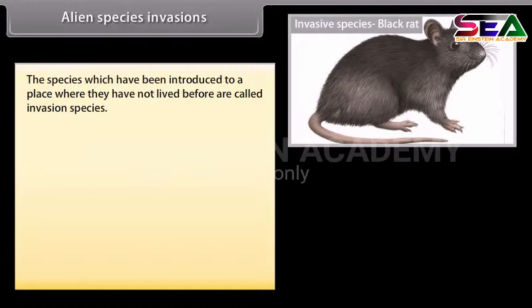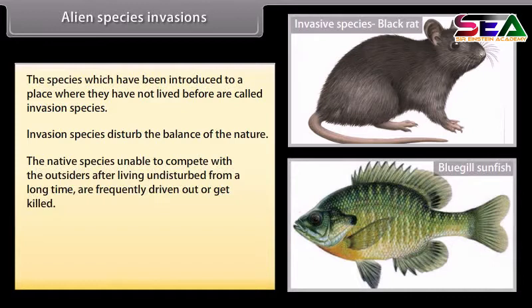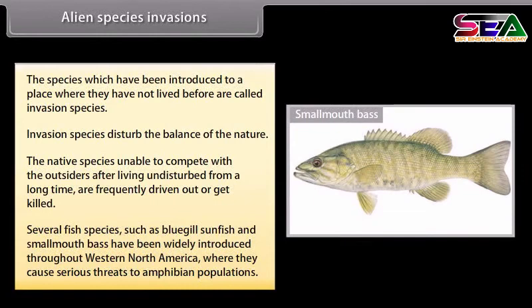Alien Species Invasions. Species which have been introduced to a place where they have not lived before are called invasive species. Invasive species disturb the balance of nature. Native species, unable to compete with the outsiders, are frequently driven out or killed. Several fish species such as bluegill sunfish and smallmouth bass have been widely introduced throughout western North America, where they cause serious threats to amphibian populations.